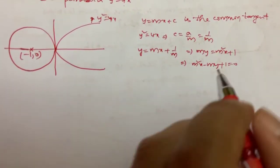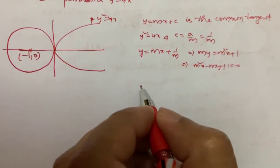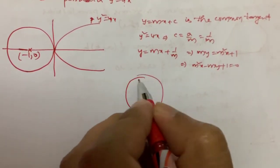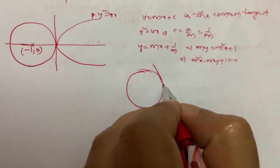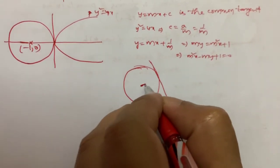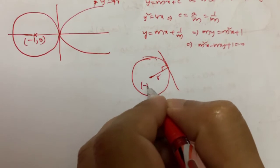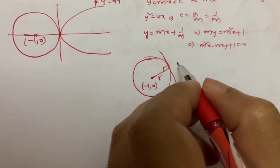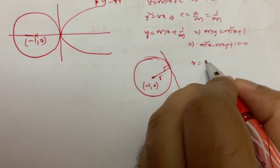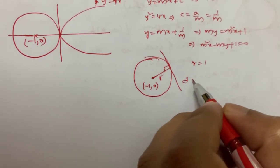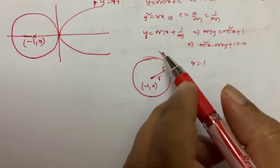If a line is tangent to a circle, then r = d. So the center is (-1, 0), and here r is 1. So d is perpendicular distance from center to that tangent line.